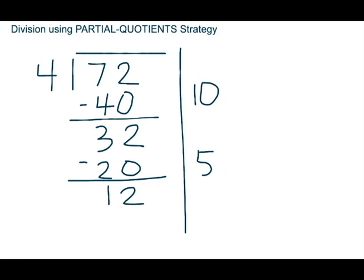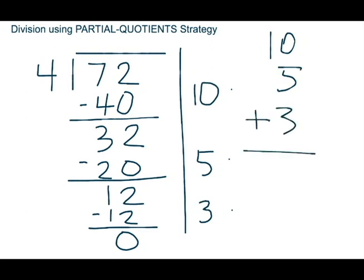I have my division facts memorized and I know that 12 divided by 4 is 3, or 4 times 3 equals 12. So 3 is my last partial quotient. 3 times 4 is 12. I subtract, and when I get to 0 I know I'm done. Now I have three partial quotients, and to find the overall quotient I add them together: 10 plus 5 plus 3 is 18. I write 18 up top — 72 divided by 4 gives me a quotient of 18.